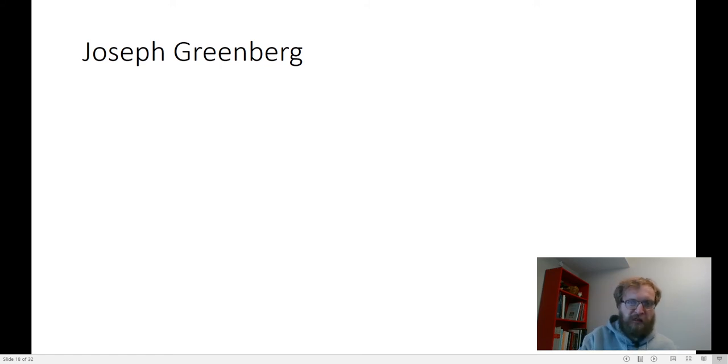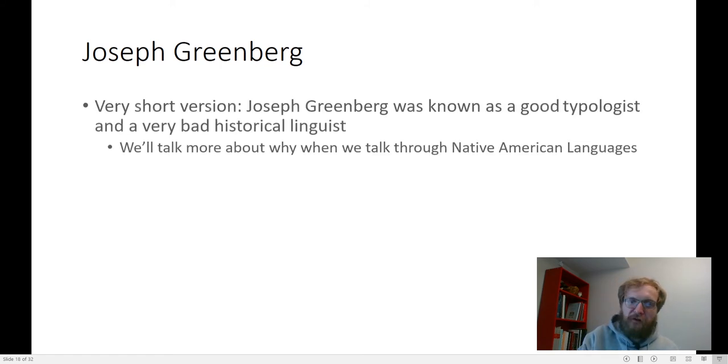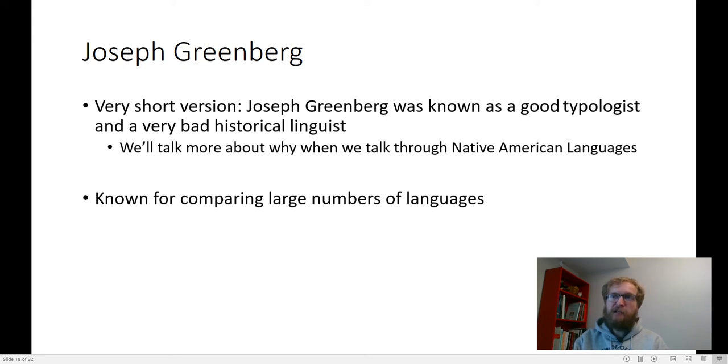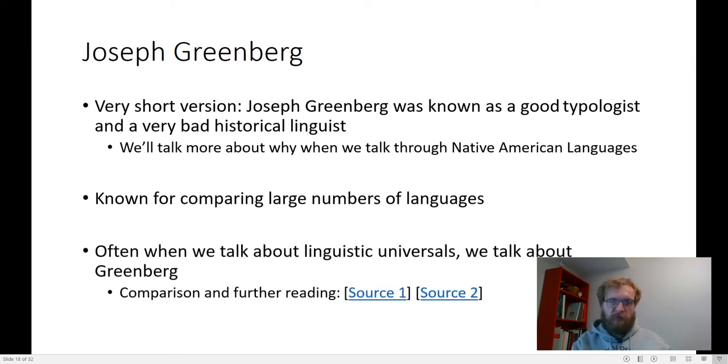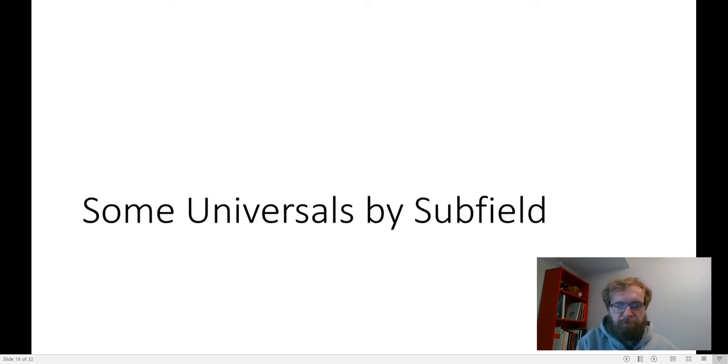We should talk a little bit about this guy, Joseph Greenberg. He's a very important typologist. Next class, we'll talk a little bit more about why he has a really bad reputation as a historical linguist, especially among people who know Native American languages. But for now, he's a very well-respected typologist. He's known for comparing huge numbers of languages, and often when we're talking about the search for universals and we're talking about linguistic typology, we're talking about Joe Greenberg. There's a couple of extra sources. If this is something you're interested in, I'll put the links to them in the PowerPoint.